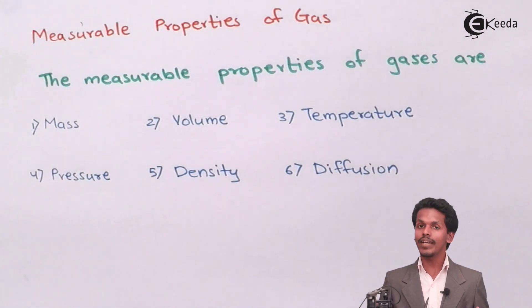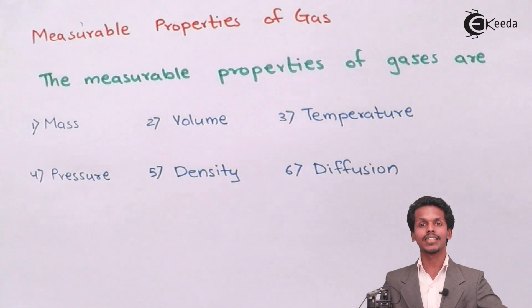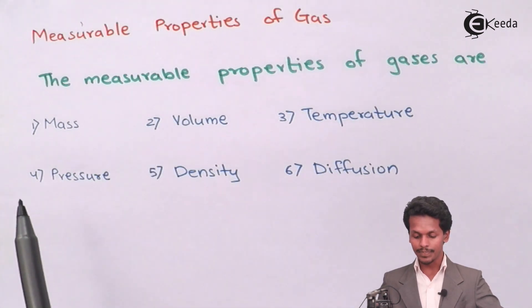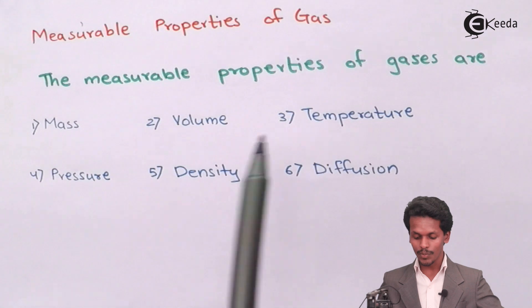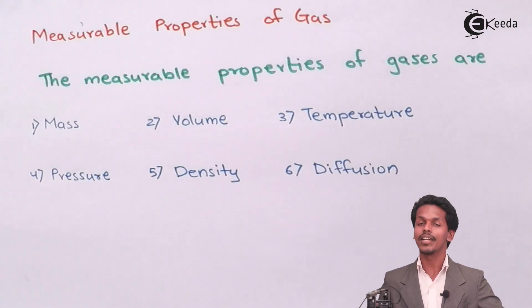So now let us learn each one, one by one, and see what are the properties of mass, volume, temperature, pressure, density, and diffusion.